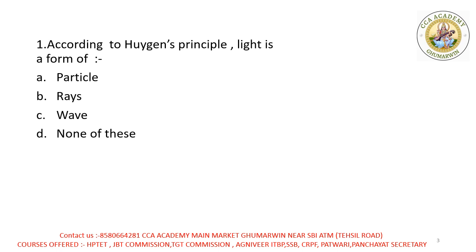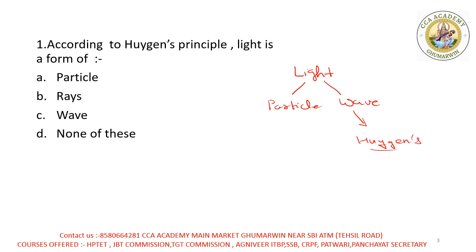Huygens ne bola hai ki jo humari light hoti hai, uska ek particle nature hota hai aur ek wave nature. Jo wave nature discover kiya hai, woh Huygens ne kiya hai. Toh iska option C rahega.